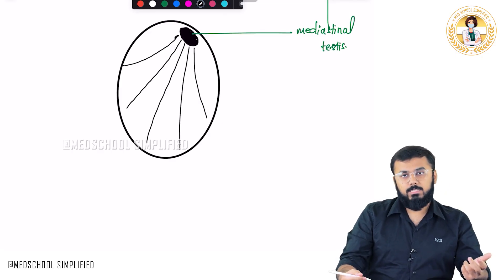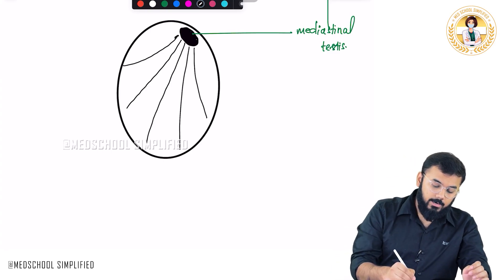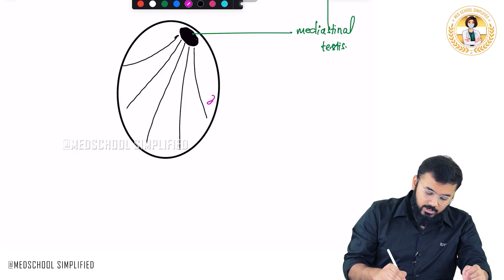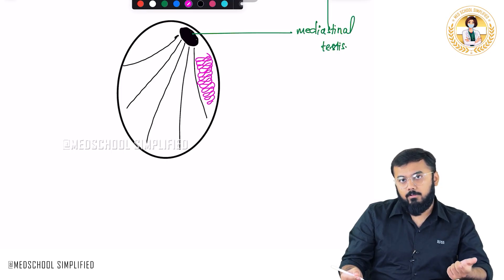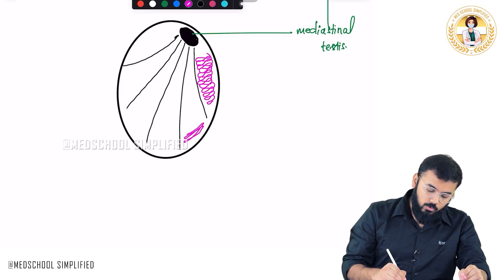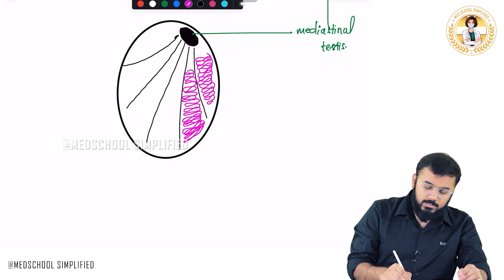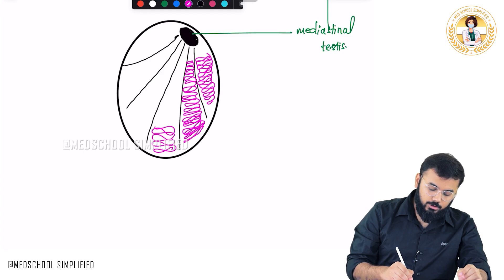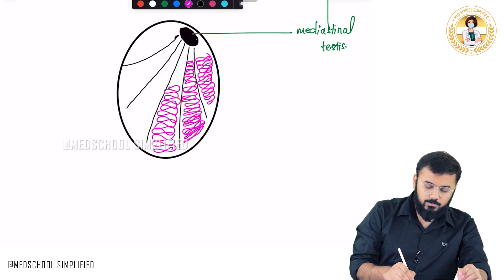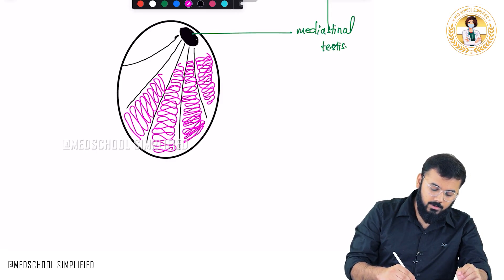There are around 200 to 300 lobules formed. Within these 200 to 300 lobules, you see multiple structures - these are called as seminiferous tubules. There are around 500 to 600 seminiferous tubules. The mediastinum testis forms septa, these septa divide the testes into different lobules, and within each lobule you have got these coiled seminiferous tubules.